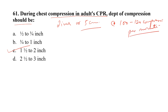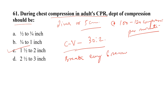If the patient is not on an ET tube, the compression to ventilation ratio is 30:2. If the patient is on advanced airway or endotracheal tube connected with the ventilator, then the rate should be given every 6 seconds or 10 breaths per minute, with continuous chest compression without stopping.